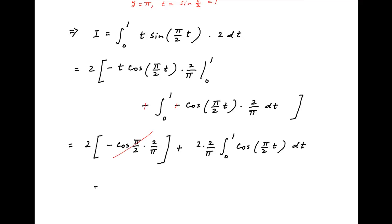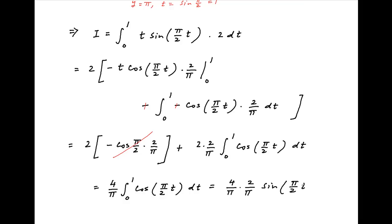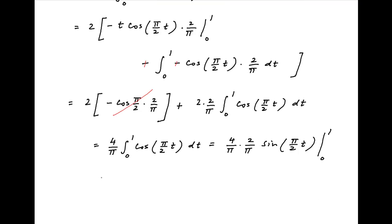cos(π/2) equals 0, so the first term vanishes. Therefore I equals (4/π) times the integral from 0 to 1 of cos(πt/2)·sin(πt/2) dt. This equals (4/π) times sin²(πt/2) evaluated from 0 to 1, which equals (8/π²) times [sin(π/2) minus sin(0)], giving the final answer: I equals 8/π², the value of the given definite integral.